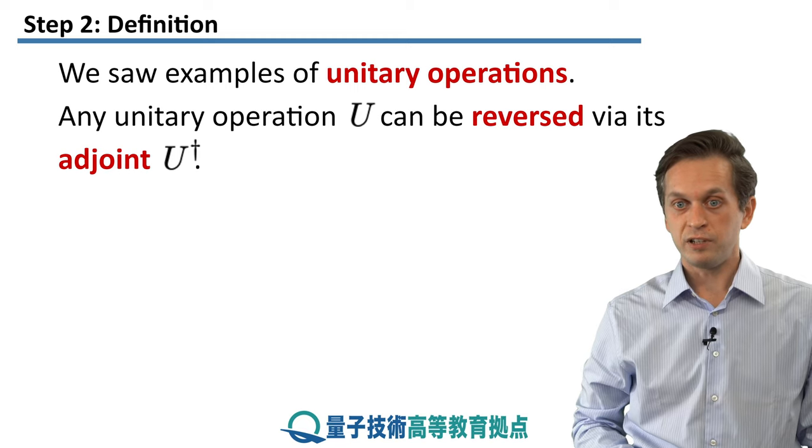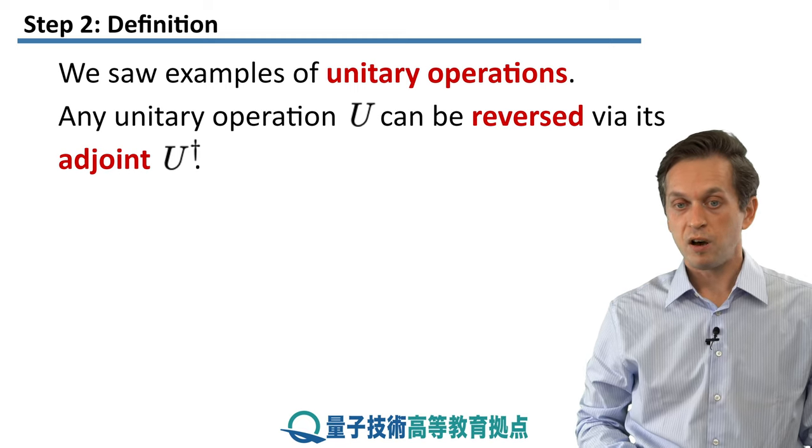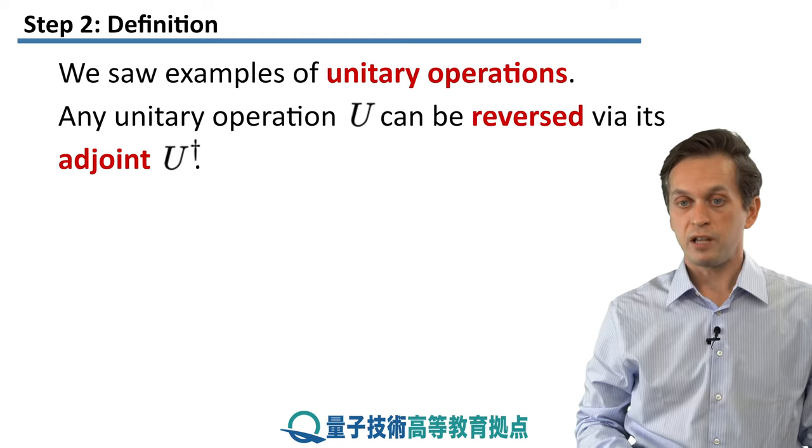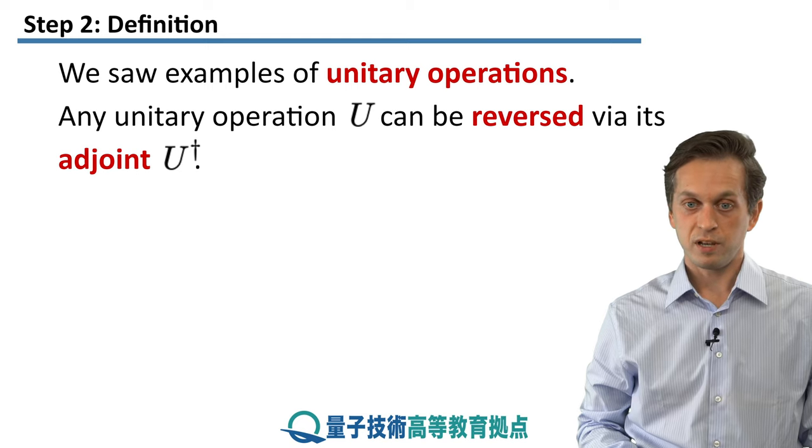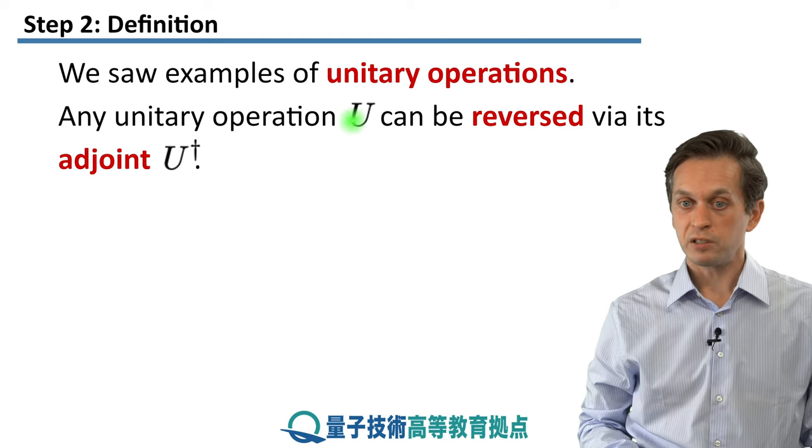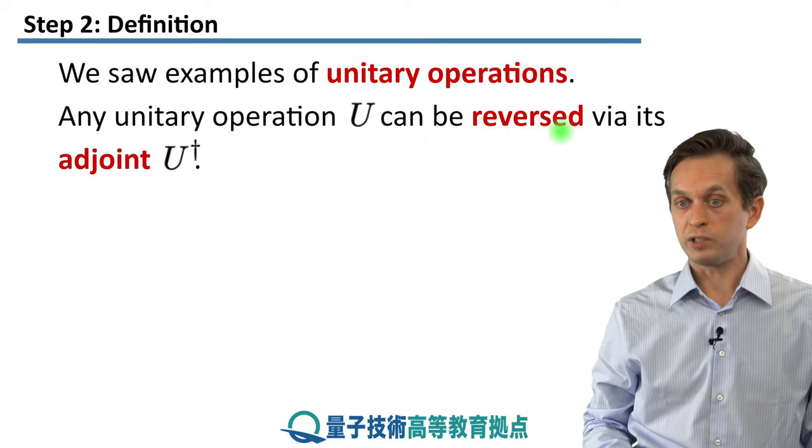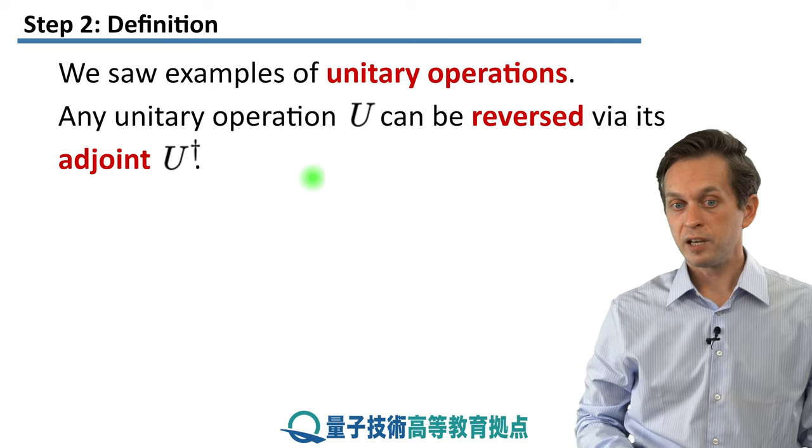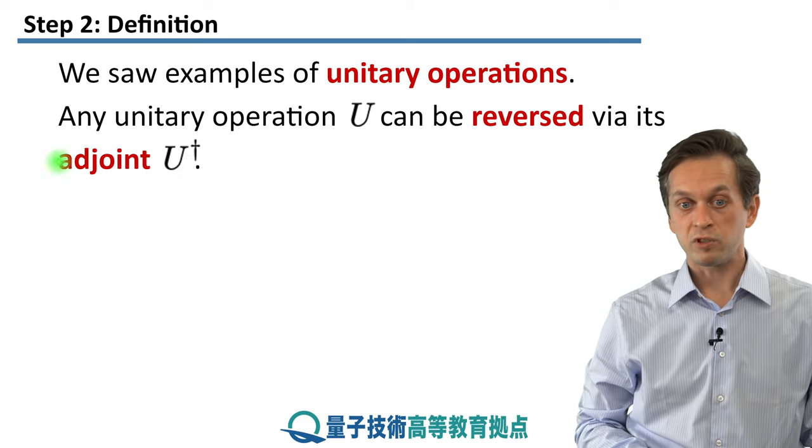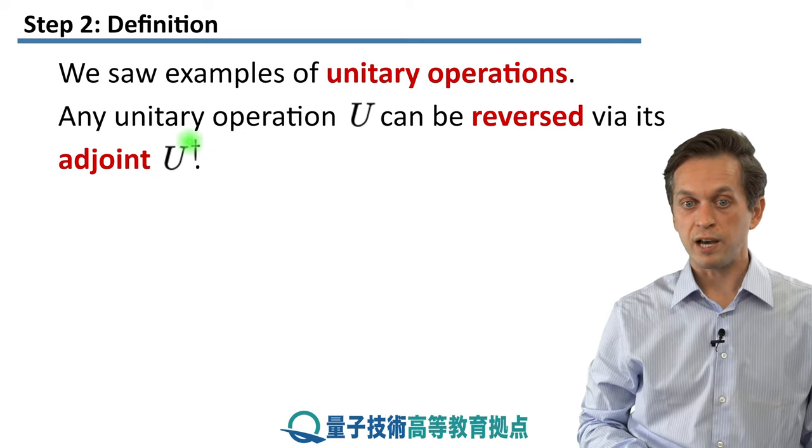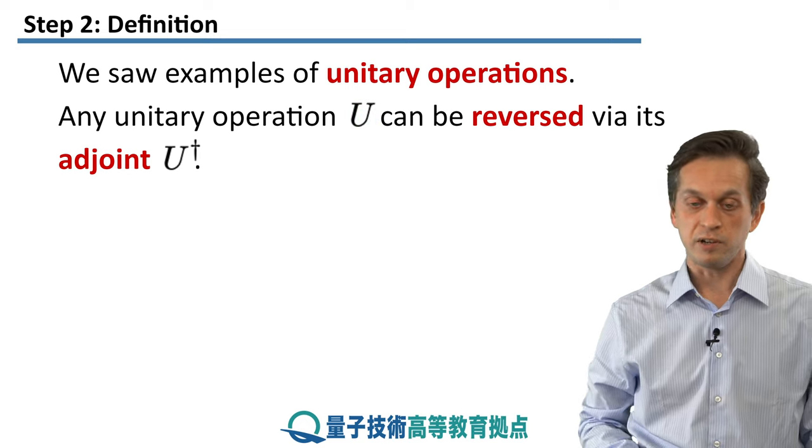So, what's the definition of a unitary operation? All of these examples that we considered are examples of unitary operations. Any unitary operation has the property of being reversible. That means we can undo it, we can reverse its effect. And this is done by what's known as an adjoint, denoted as U†, where U is the unitary.